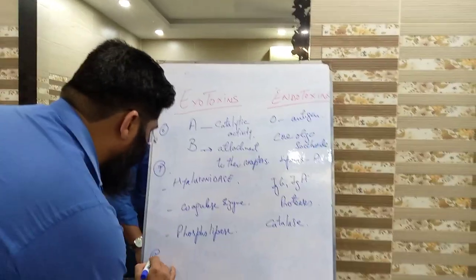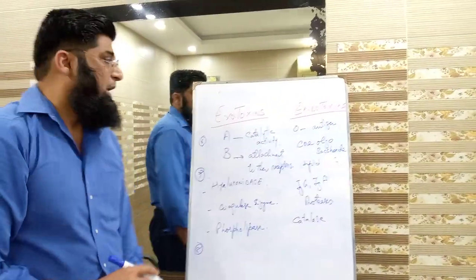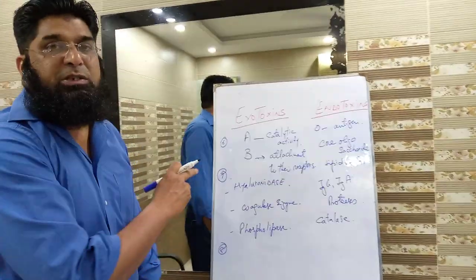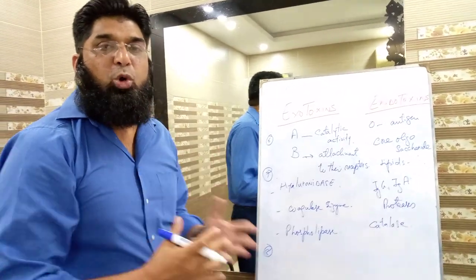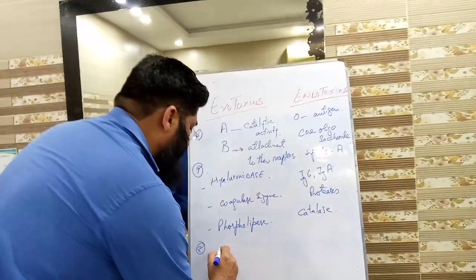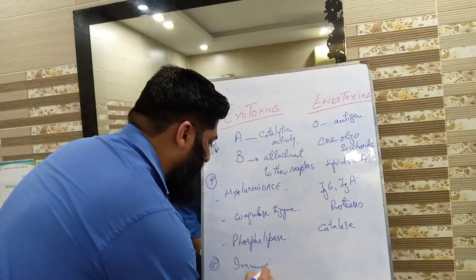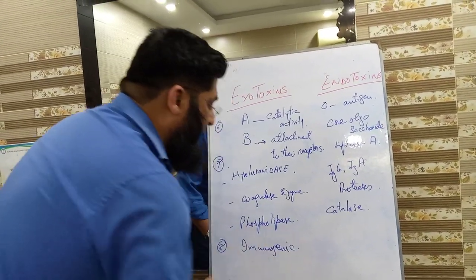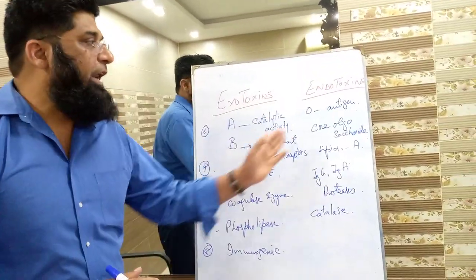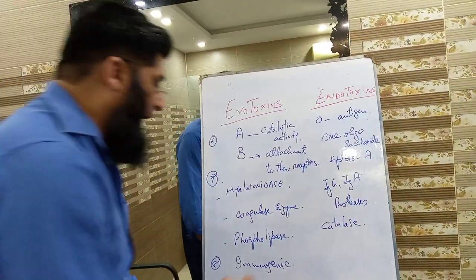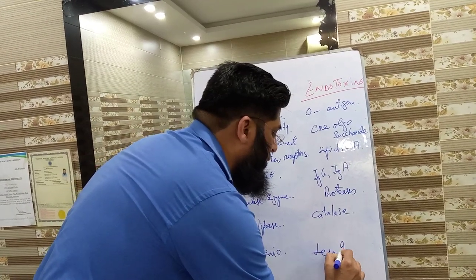The next differentiating point is immunogenicity. Exotoxins are more immunogenic, whereas endotoxins are less immunogenic.